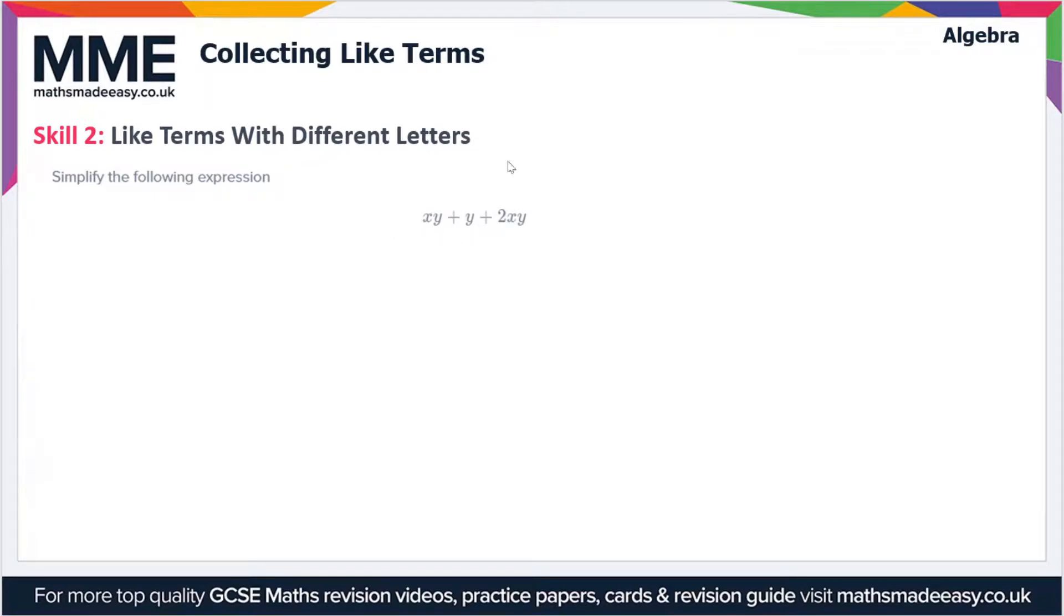Starting with expressions where we have like terms with different letters, so we have to simplify this expression here which is xy plus y plus 2xy. What are the like terms in this expression? I'm going to reorder the expression so you can see.